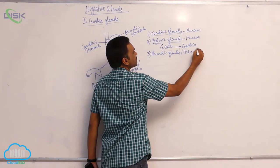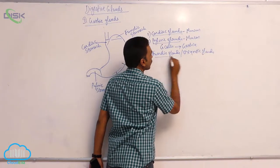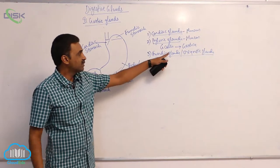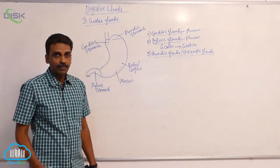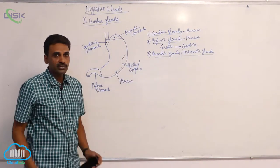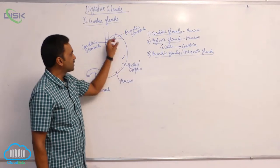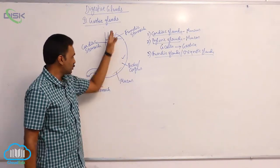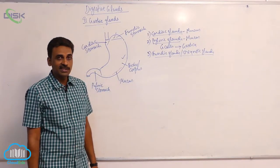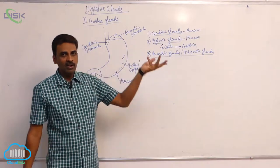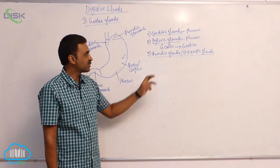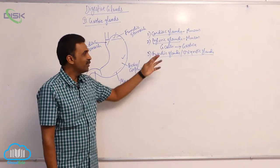The third type of gastric glands are fundic glands, also called oxyntic glands. They are present in the fundus and also in the corpus — throughout the body of the stomach. Structurally, all three types of glands are similar; it is the secretions and nature of cells that vary.